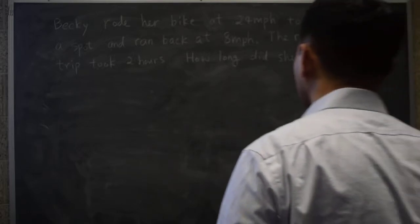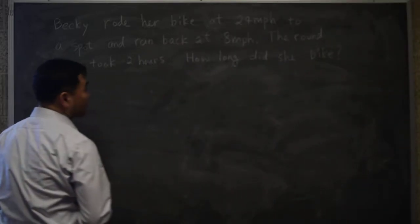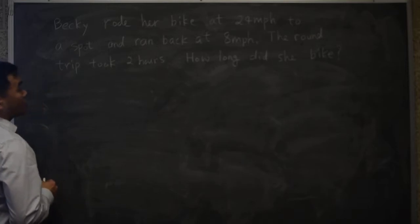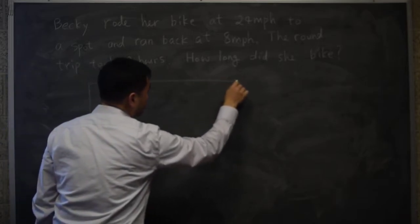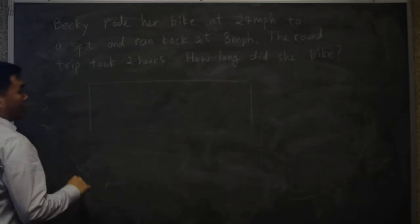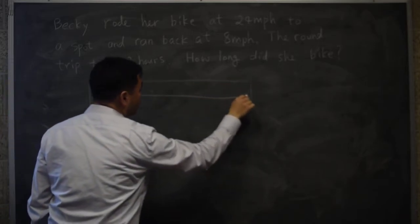Let's look at this second example of speed, time, and distance problem. As before, you want to make a table and the question has two stages.